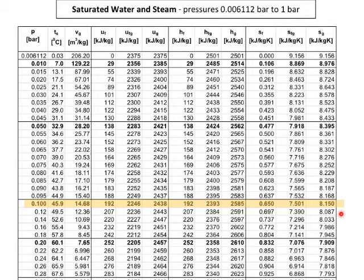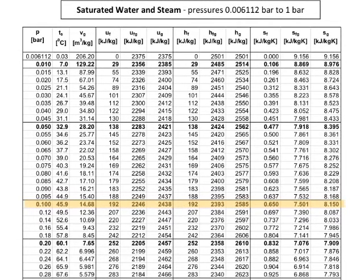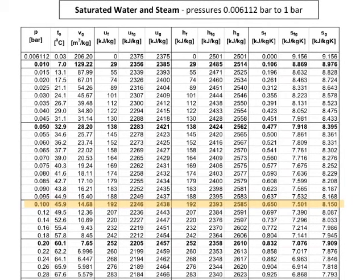So, clearly, our steam is in the wet region. So, for the rest of the solution, we will focus our attention on the saturated water and steam, this particular page, called the wet zone, in the steam tables.